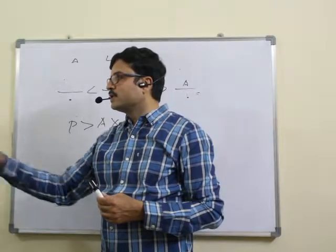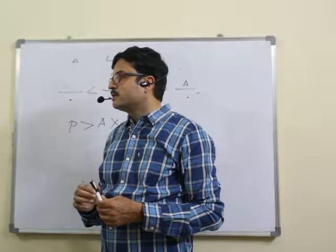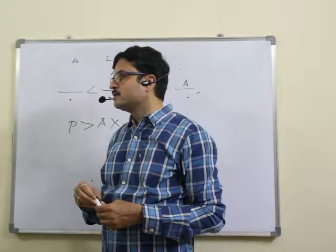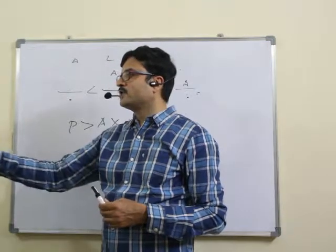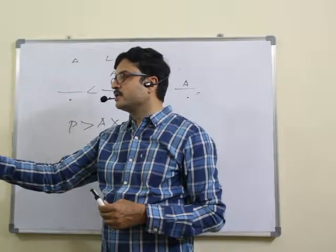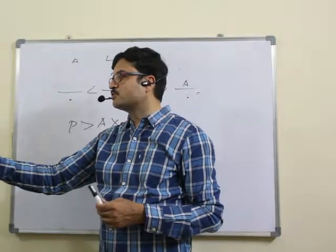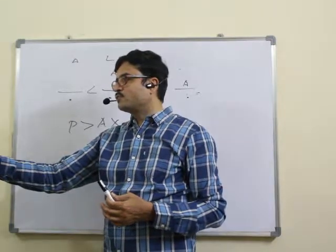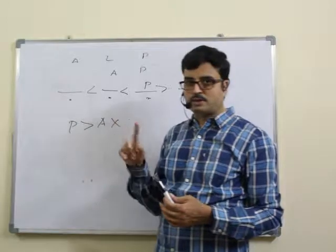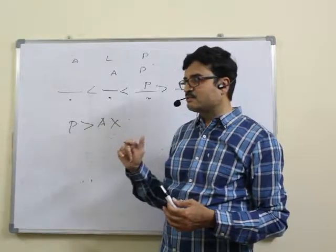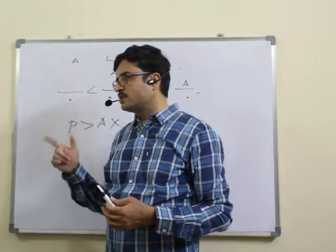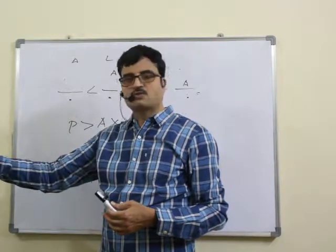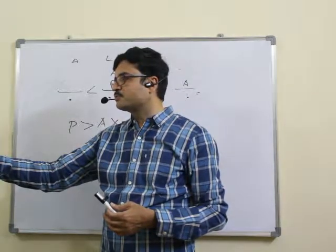Question 45: F greater than N and U greater than D definitely true. Based on F greater than N: first, second, third options ruled out. Answer should be either 4 or 5. In the fifth option, lesser-than is given last, which is not correct since U should be greater than D. Answer: 45, fourth option.